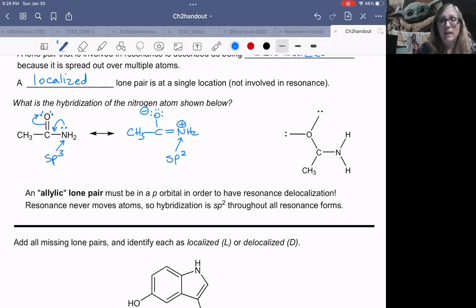If you remember what we said about resonance, atoms don't move in resonance, so it can't be going from tetrahedral to trigonal planar. Bond lengths don't change, bond angles don't change, the atoms are frozen. This nitrogen was never sp3, it was sp2 from the beginning, it must be sp2 in both resonance forms.